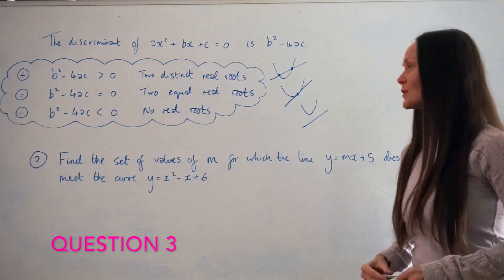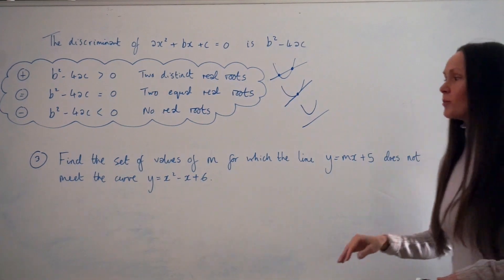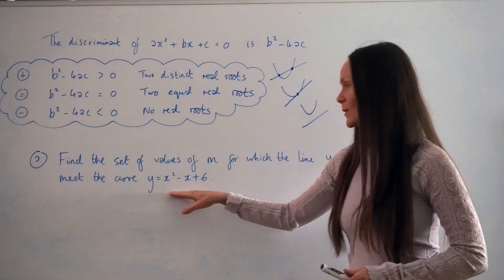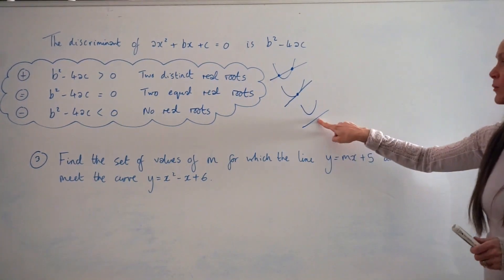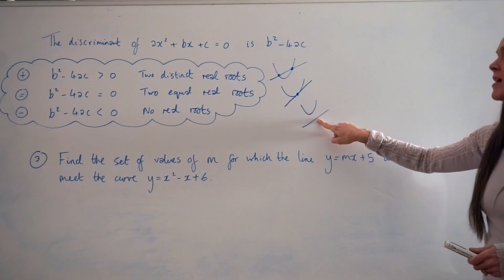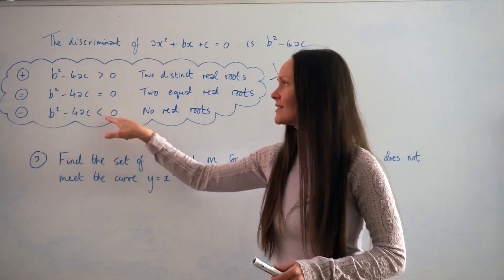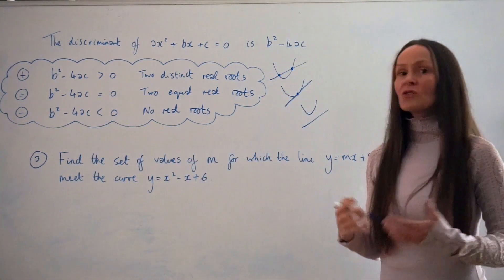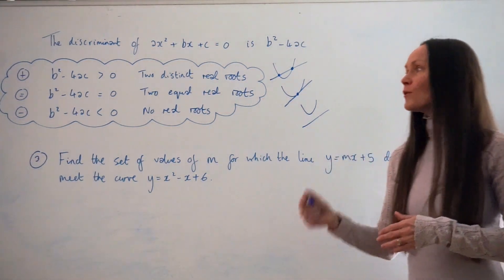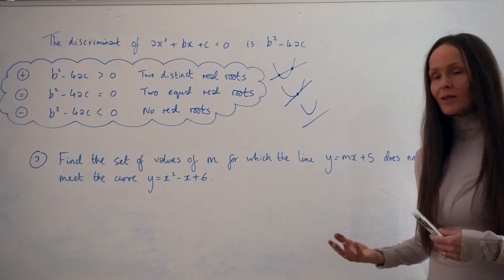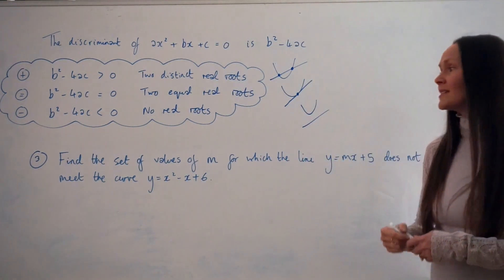In question 3, it says: find the set of values of m for which the line y equals mx plus 5 does not meet the curve y equals x squared minus x plus 6. This time the straight line and the curve don't intersect, so the discriminant is negative — less than zero. We solve the simultaneous equations, rearrange to equal zero, find the discriminant, write it as an inequality less than zero, and solve for the set of values of m.